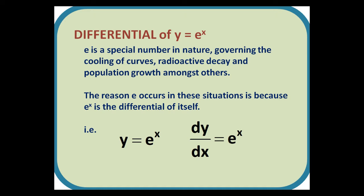Differential of y equals e to the x. E is a special number in nature, governing the cooling of curves, radioactive decay and population growth amongst others. The reason e occurs in these situations is because e to the x is the differential of itself. That is, if y equals e to the x, then dy by dx also equals e to the x.